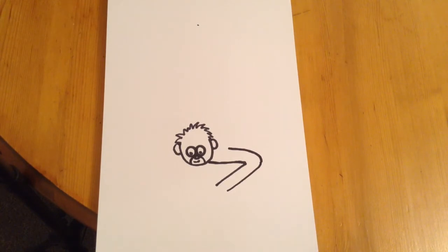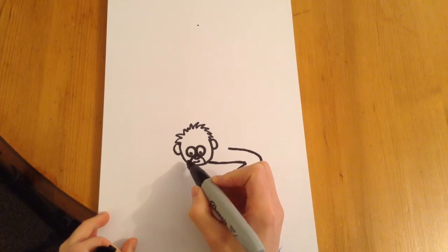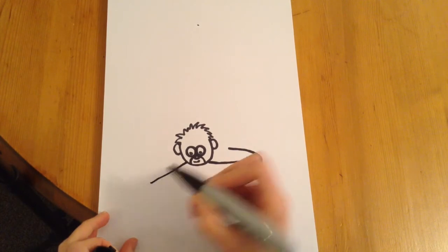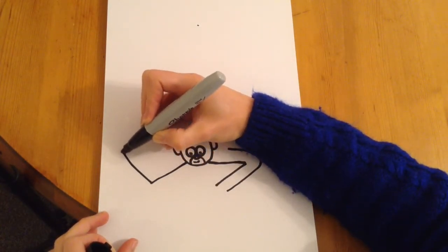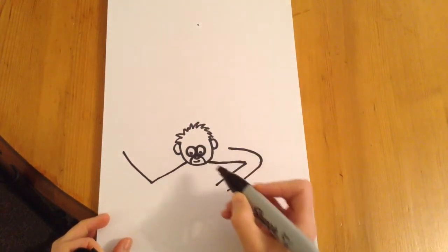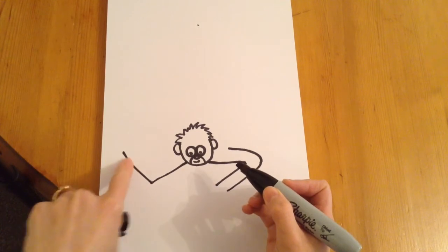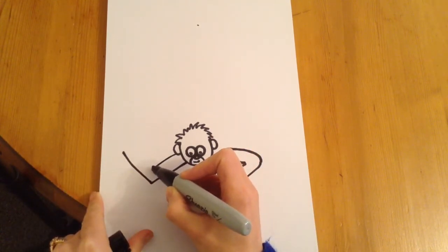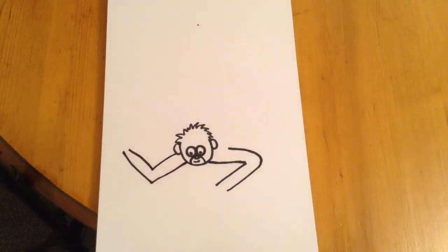We're going to start the left arm now. So the same theory, you start just underneath the head. Now we're going to do a V shape going down like this and another one coming up. We're going to do the same, and we're going to do one line that's parallel to this line and another one that's parallel to this line. Now we have the arms.